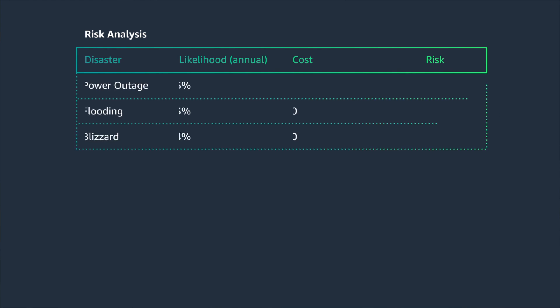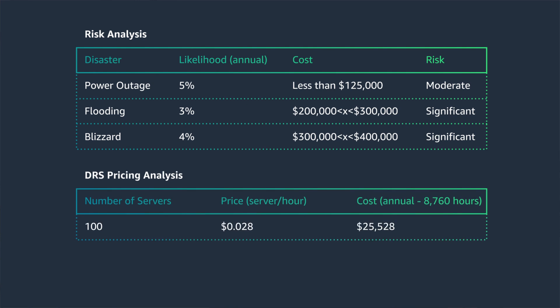One anti-pattern I see with customers is not quantifying the business impact of a disaster. You can use something like a risk analysis to help you measure not only the financial cost of a disaster, but in my case, the loss of public trust toward New York City government because of lack of transparency. A risk analysis like you see here will help formulate the right DR strategy for your business.